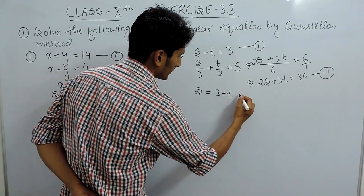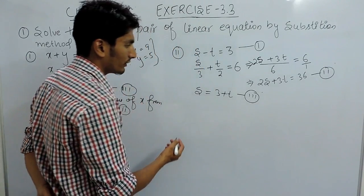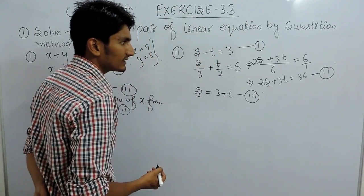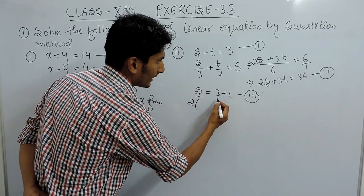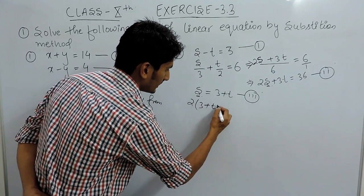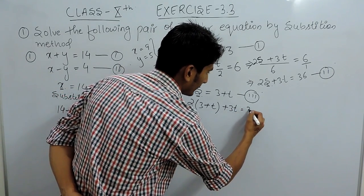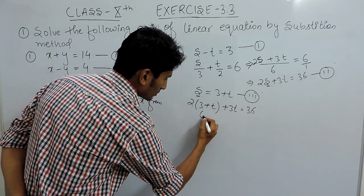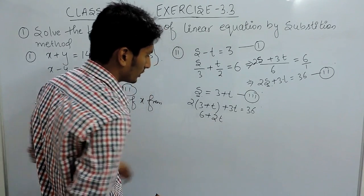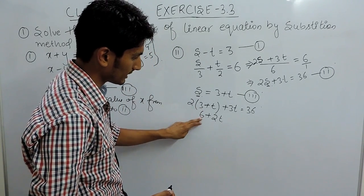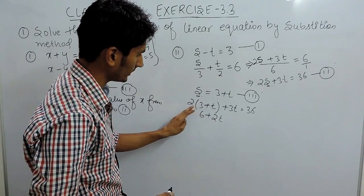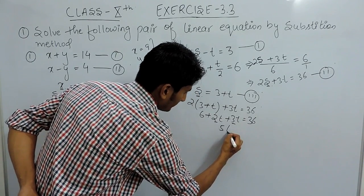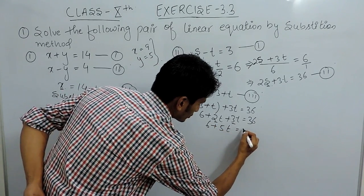From the first equation, we find s equals 3 plus t — this becomes equation three. After that we substitute the value of s in equation two. Replacing s with 3 plus t and keeping the remaining equation as it is, we open the bracket: 2 times (3 plus t) gives 6 plus 2t. So 2t plus 3t is 5t, and 5t plus 6 equals 36.